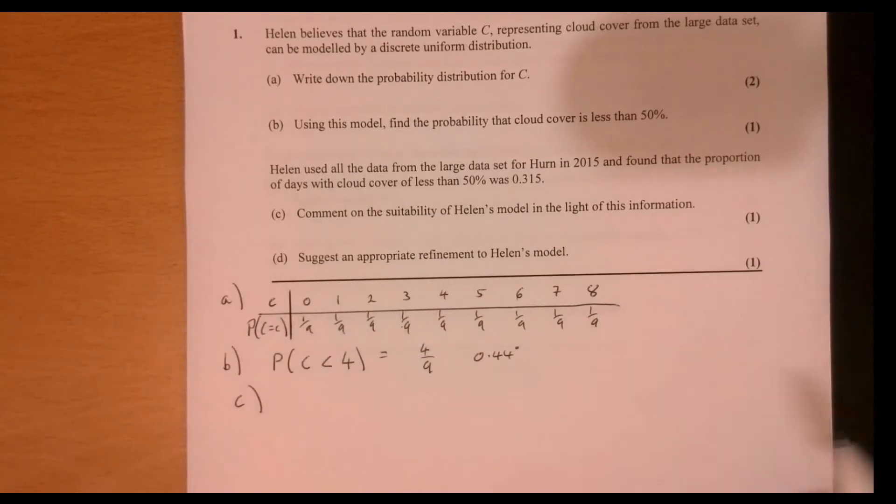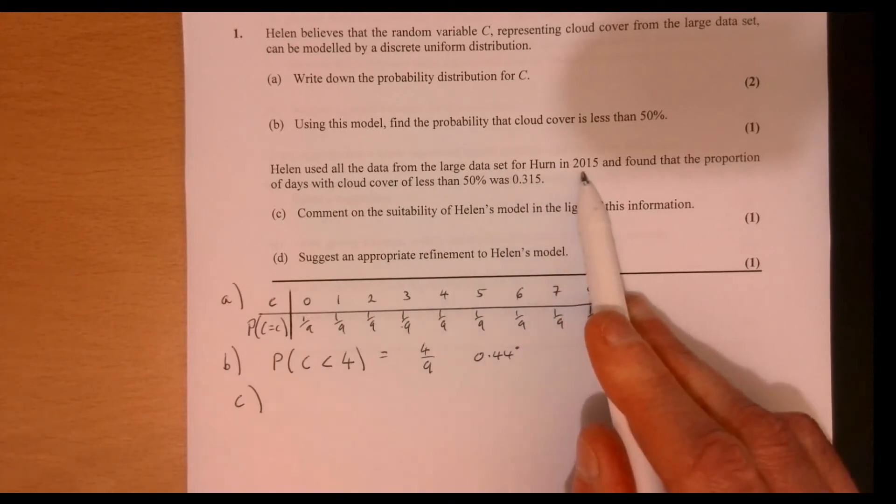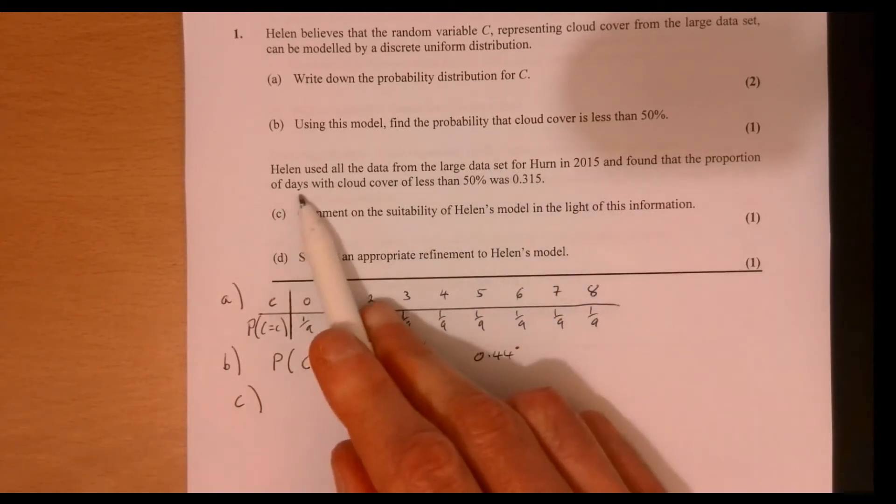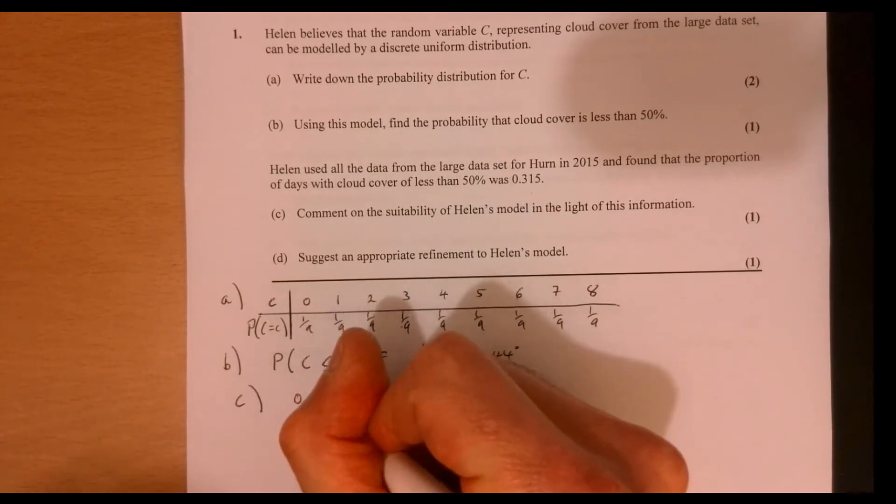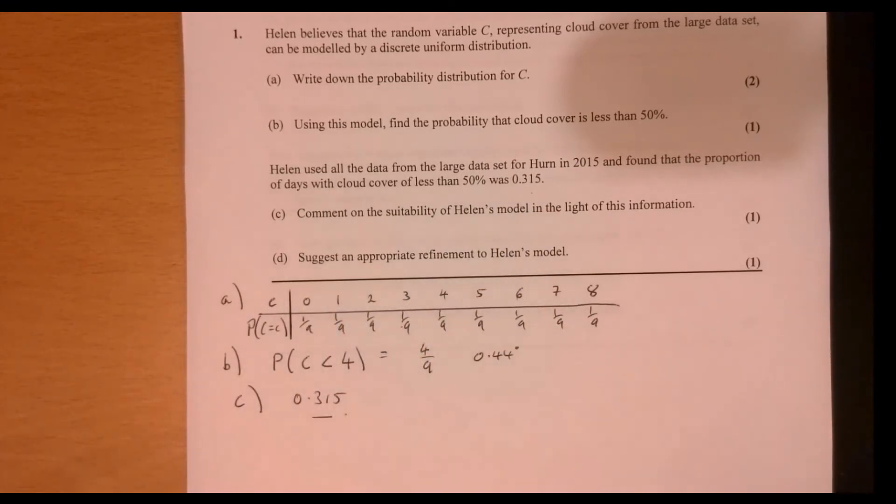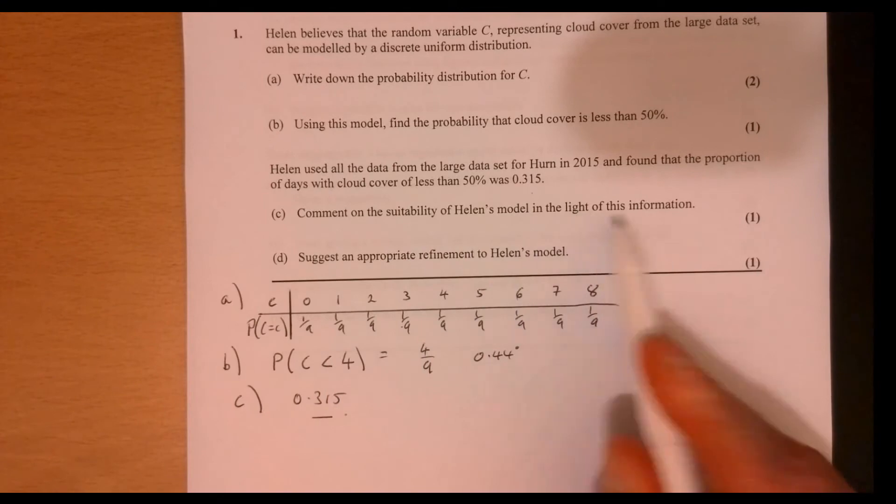So part C says Helen used all the data from the large data set for Hearn in 2015 and found the proportion of days with cloud cover of less than 50% was 0.315. And then it asks us to comment on the suitability of Helen's model in the light of this information.